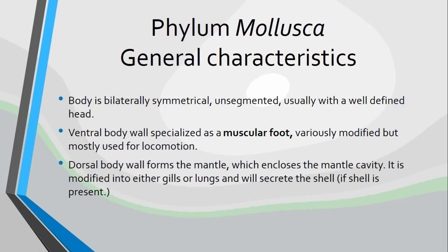Let's talk about some general characteristics of phylum mollusca. The body is bilaterally symmetrical — opposite to the echinoderms we talked about before, which are radially symmetrical, meaning their body plan radiates from a central axis. The sea star was pentamorous, meaning it had five planes that could divide it into equal halves. A bilaterally symmetrical organism has only one plane to divide it into right and left halves, similar to us. The molluscs are no different — they also have bilateral symmetry.